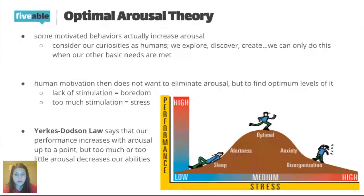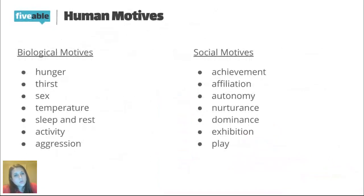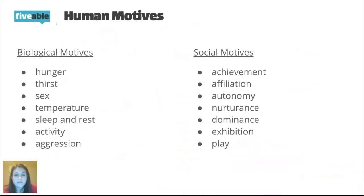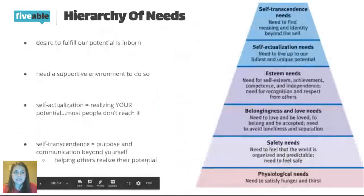The fourth main theory is the hierarchy of needs. We have various motives — many biological, like hunger, thirst, sex, temperature, sleep. Those fit into drive reduction theory. Activity and aggression relate to optimal arousal. But social motives — why I want to play, feel affiliation with a group, experience autonomy — can't be explained by those theories. That's where the hierarchy of needs comes in.